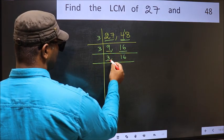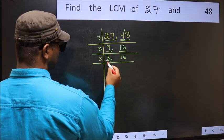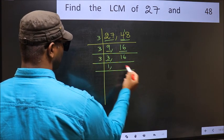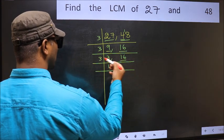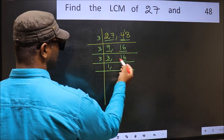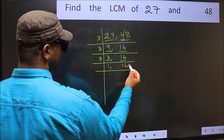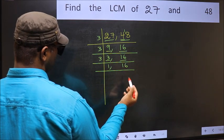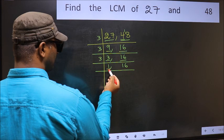Now here we have 3. 3 is a prime number, so 3 once 3. The other number 16 is not divisible by 3, so you write it down as it is. Now we got 1 here.